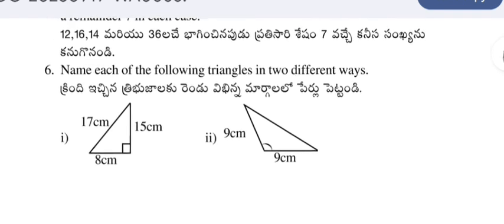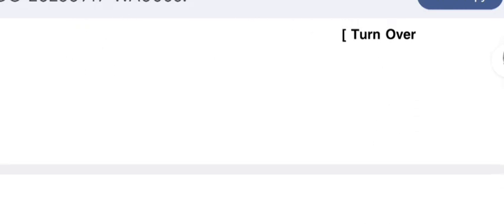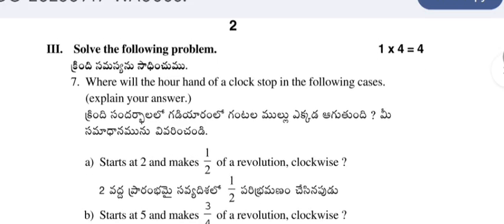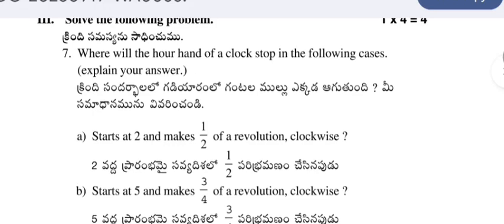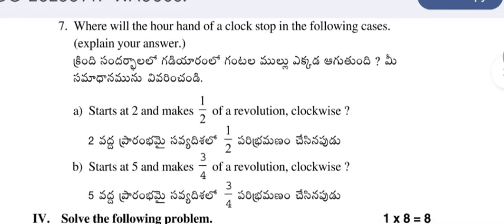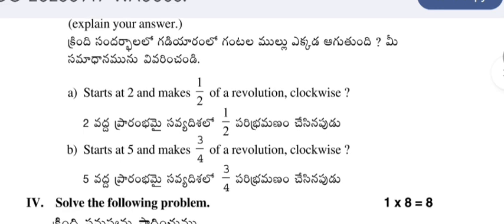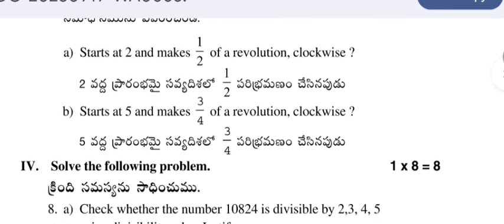Name each of the following triangles in two different ways. These answers are also given in the answer paper, you can see them. Solve the following problem: where will the hour hand of a clock stop in the following cases? Explain your answer. A: starts at 2 and makes 1/2 of a revolution in clockwise direction.